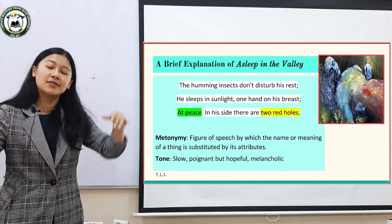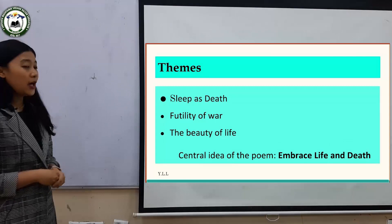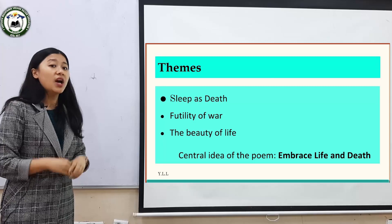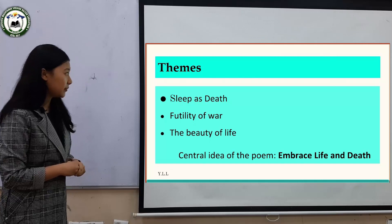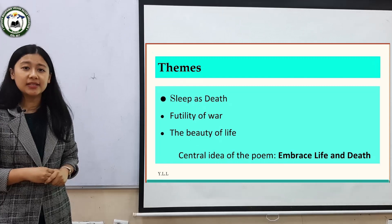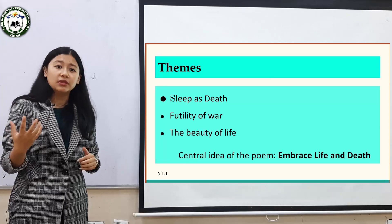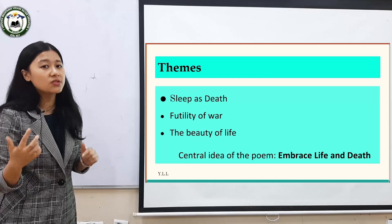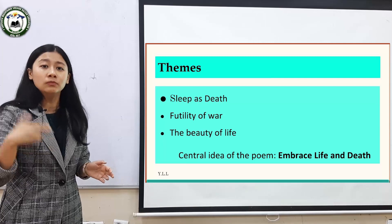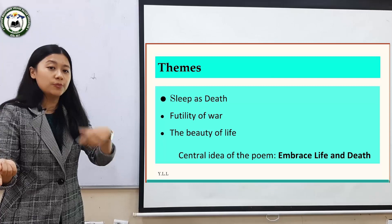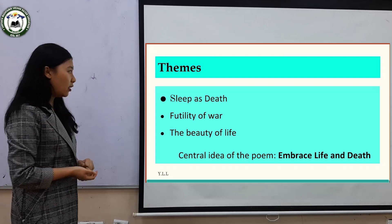Now let's discuss the themes the poet wanted to highlight. First, sleep as death: the poet has represented death as sleep. He has ironically used the term 'sleep' for death — the soldier was not sleeping but was actually dead. So the poet has interchangeably used 'sleep' to mean death.